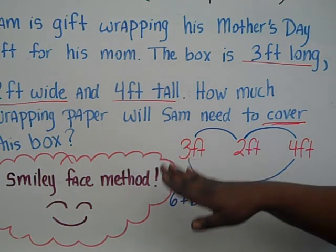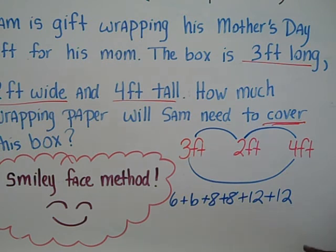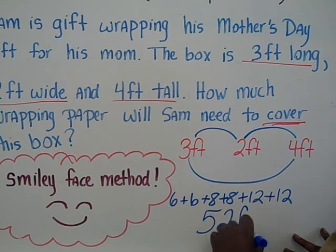Now, what you would do is add up all the faces together, and you will see that this rectangular prism has a surface area of 52 feet squared.